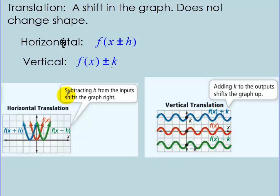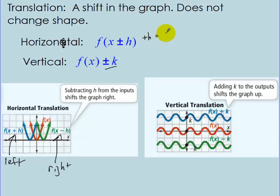For horizontal translations: when you add h to x (plus h), it actually shifts the graph to the left. When you subtract h (minus h), it shifts it to the right. Write that down — plus h equals to the left, minus h equals to the right. For vertical shifts, plus k shifts the graph up, and minus k shifts it down. So: plus k equals going up, minus k equals going down.